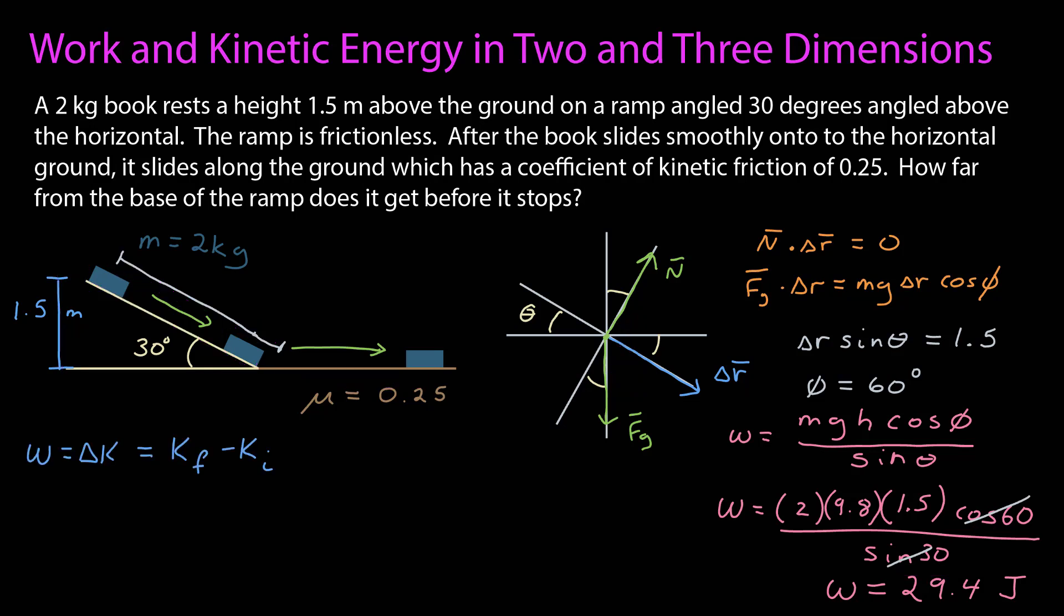From the work kinetic energy theorem, I know that the total work is equal to the change in kinetic energy, which is the final minus the initial. Now, it started from rest, so I know the initial kinetic energy is zero. I also know that the kinetic energy is one-half mv squared. Should I go ahead and calculate the velocity? I don't think so.